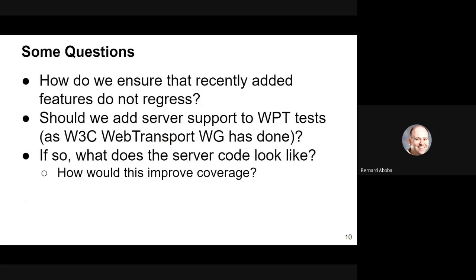Some questions we'd like to answer during this discussion: how do we ensure that recently added features don't regress? You check stuff in, somebody builds an entire service on it, and then it breaks. Some ideas are to add server support to WPT tests — this is what is being done in the Web Transport Working Group. But as we've seen with the AV1 N-to-N test suite, there are limits on what people can do for build validation. We need to think about what the server code could look like and how much additional coverage we would get.